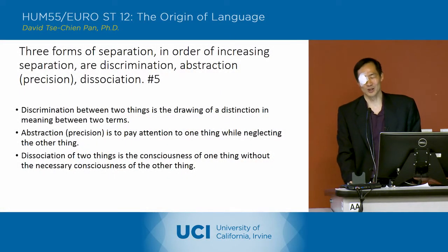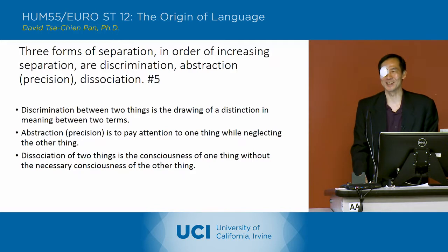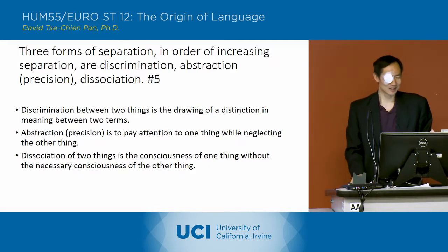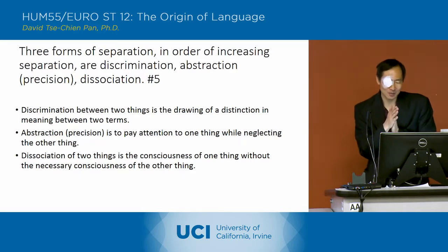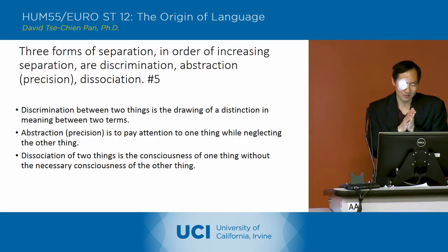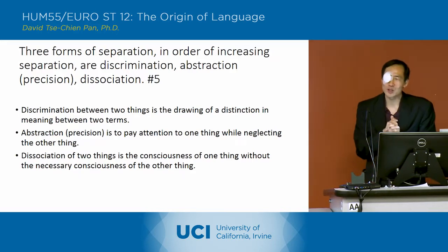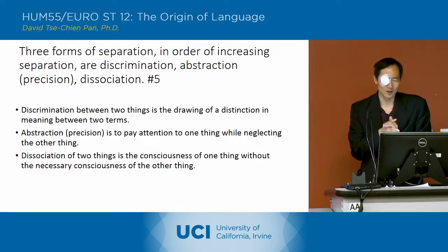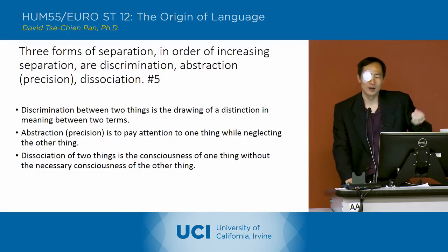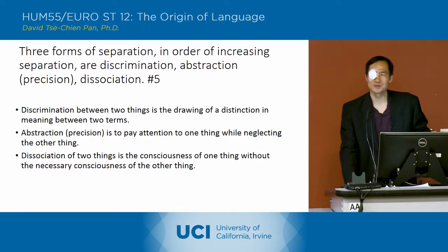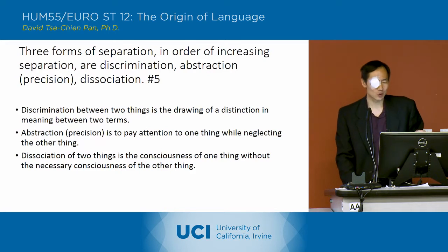This next part is kind of hard. He talks in paragraph five about these three forms of separation. In order of increasing separation, they are discrimination, abstraction or precision, and dissociation.